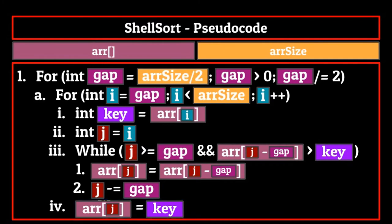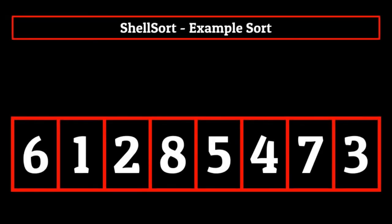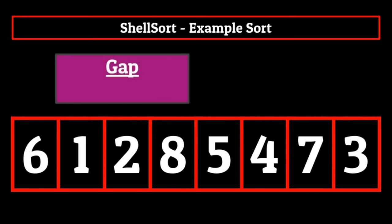Hopefully now it makes more sense how we actually sort the list using the gap method. Now we're going to make things even clearer by doing an example shell sort and then looking at things through the visualizer. If you watched our video on insertion sort, you'll know that the comparison process does take forever, so we'll be abstracting a lot of the variable comparisons in this video. Okay, so say we have a list of eight elements. According to our pseudocode, the first thing we must do is calculate a gap variable. This gap variable is initially set to the size of the list divided by two. Since the size of the list is eight elements, this makes our initial gap four.